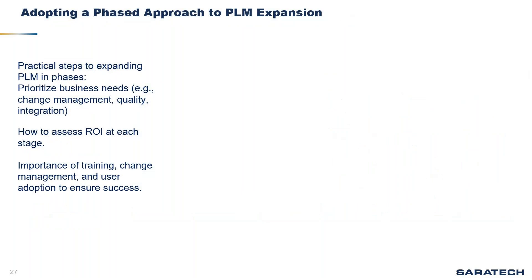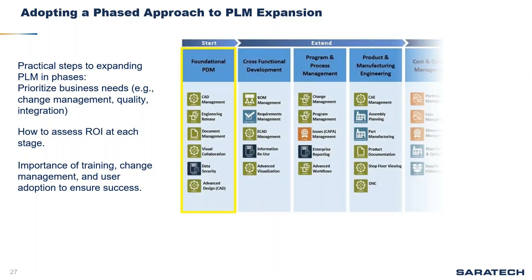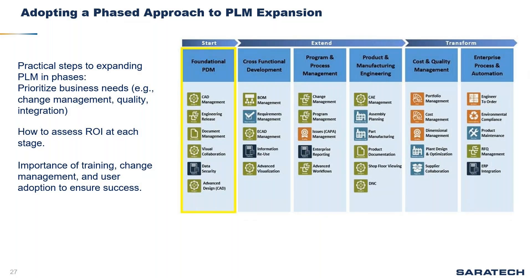With so many modules and capabilities available, we need to look specifically at your business needs, where you are with your implementation, what stage you're in, and then start extending and transforming your business capabilities — moving from foundational PDM into other areas. It really requires developing a roadmap and looking at the ROI for each stage, configured to your business objectives, strategies, and organization. It's not one roadmap that fits everyone; it depends on where you are, what systems you have, and what enterprise solutions you've already implemented.